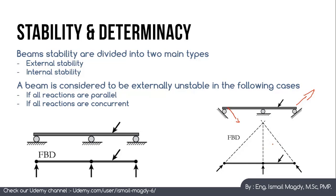In general, a beam is considered to be externally unstable in the following cases: if all reactions are parallel, or if all reactions are concurrent. This is the first type of instability — externally unstable beams.